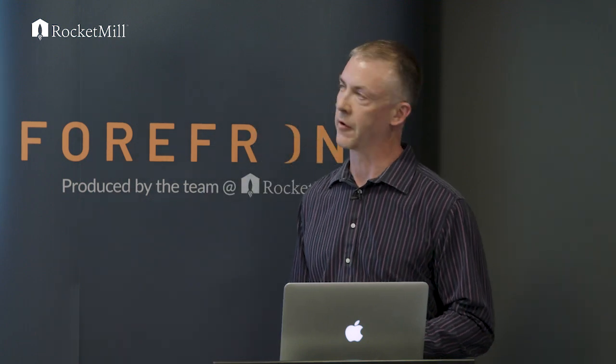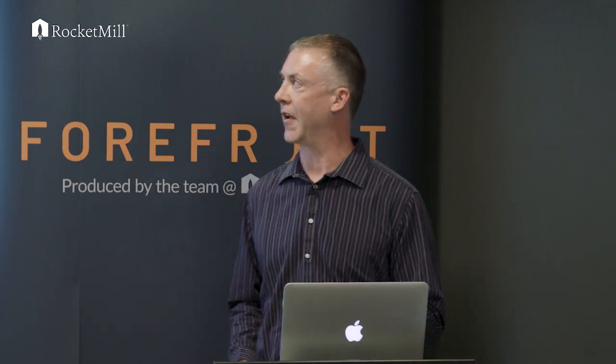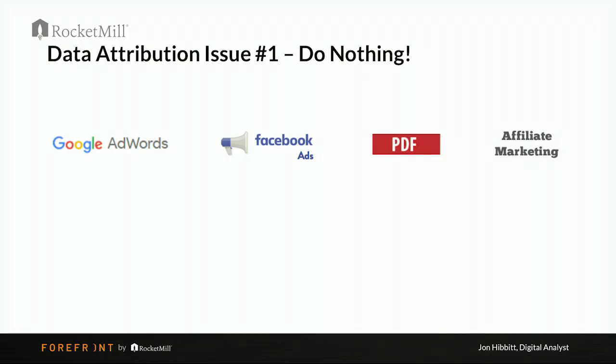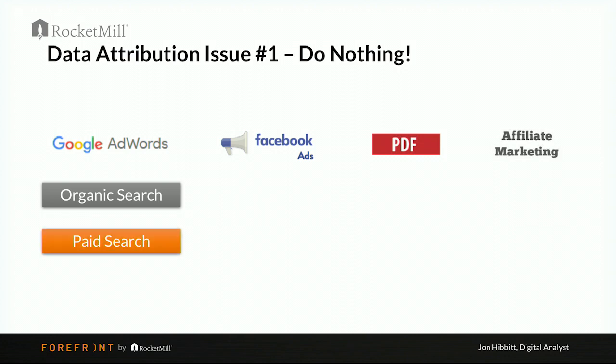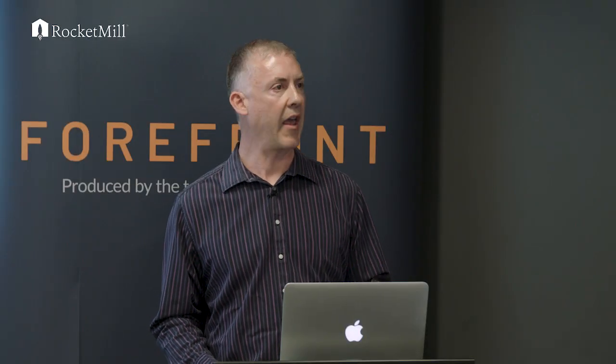So let's get into how you can destroy your data attribution in GA. We're going to look at some of the well-known marketing channels and consider what happens if we just do nothing — if we just don't use custom campaign tagging. In Google AdWords, organic search isn't a great description for that; it'll come through as paid search when you tag it properly. For Facebook ads, if it's coming from an app it will be direct, and elsewhere it'll be referred to as social — which is not great if you're trying to separate your paid from your organic.